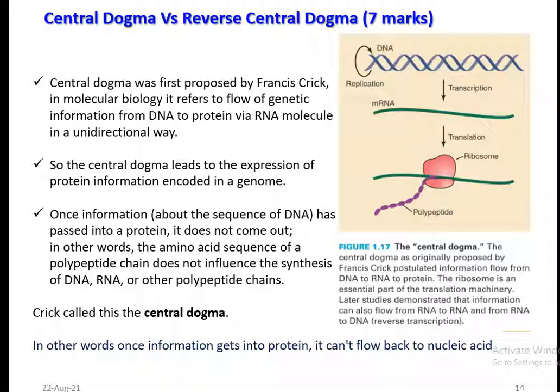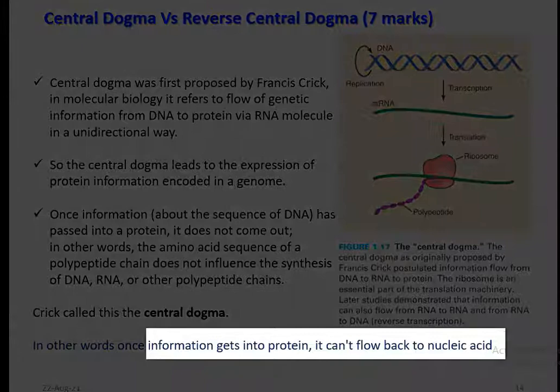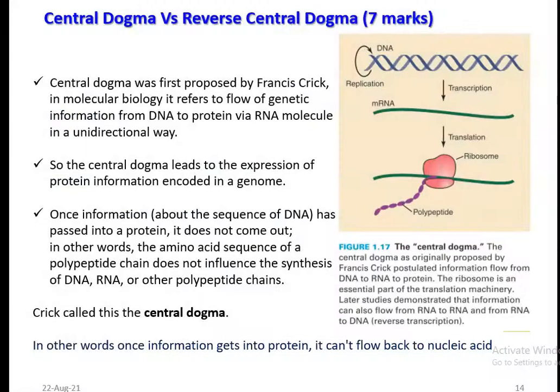Information present in the DNA molecule has been passed on to the protein — it is a unidirectional flow. Amino acid sequences present in the polypeptide chain cannot influence the synthesis of a DNA, RNA, or other polypeptide chain. This kind of unidirectional flow of information was referred to by Crick as Central Dogma in Molecular Biology. Thus, information once incorporated into the protein cannot flow back into the nucleic acid.